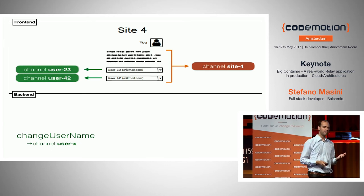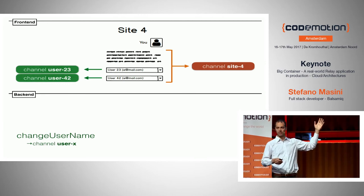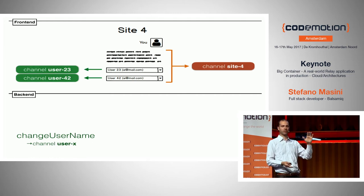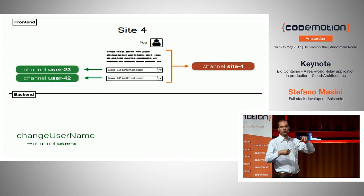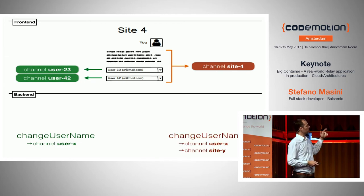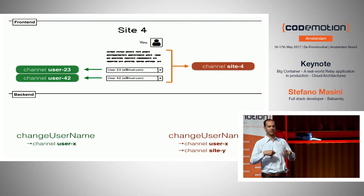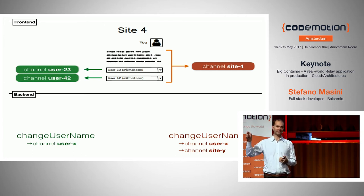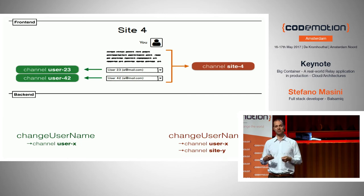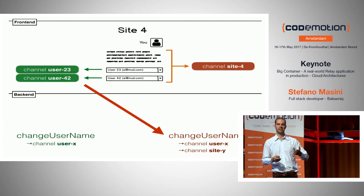One improvement is the idea of a site channel. This page is related to a site, so maybe I can have a channel for the whole site, and the server sends events for anything relevant to that site. That way I don't have to do the trick with the combo boxes. But then when I change the user name of one of those two users, the server needs to send a message on the user's channel, and if that user happens to be an owner of another site, it also has to send a message on that site's channel. If you look at it, we're just moving the complexity from the UI to the server.